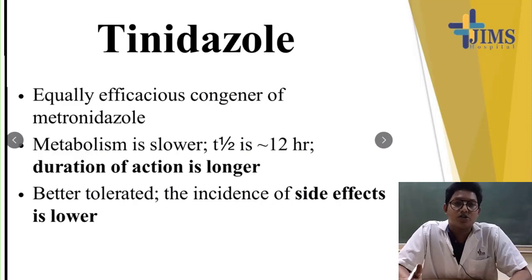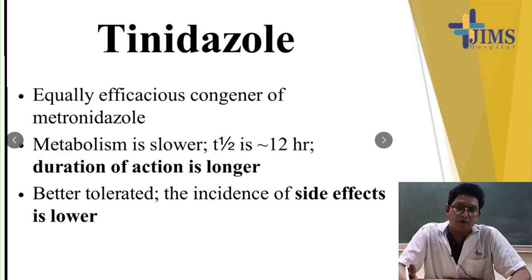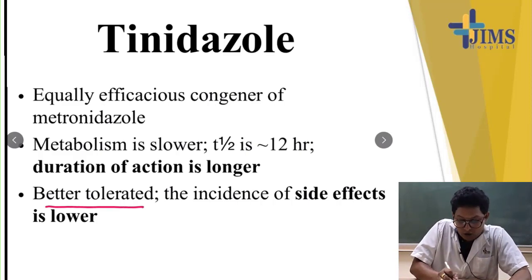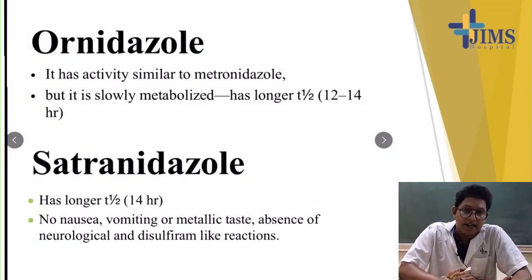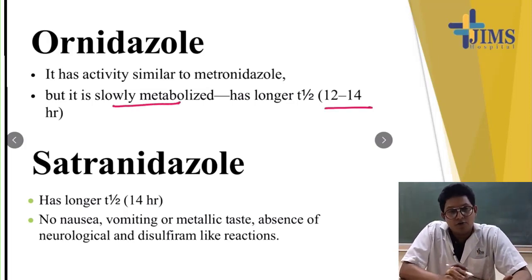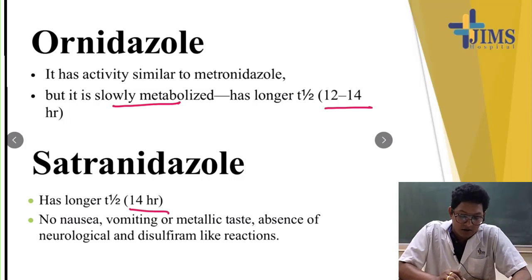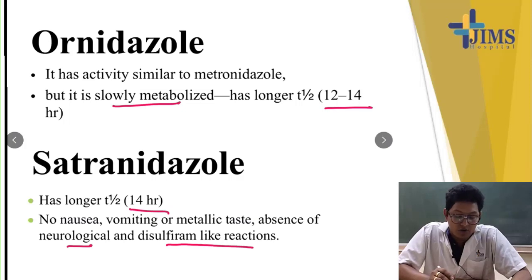Tinidazole is equally efficacious as metronidazole but its metabolism is slower, with a half-life of 12 hours, making it a longer-acting molecule with a lower incidence of side effects and therefore better tolerated. Ornidazole has similar activity to metronidazole but is slowly metabolized with a half-life of 12 to 14 hours. Satronidazole also has a longer half-life of 14 hours, but no nausea, vomiting, or metallic taste is seen; unlike metronidazole, neurological complications and disulfiram-like reactions are also not seen.